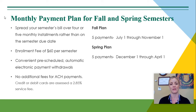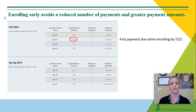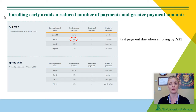The fall plan is five payments from July 1st through November 1st, and the spring plan is five payments December 1st through April 1st. Enrolling early avoids a reduced number of payments and greater payment amounts. If you enroll before June 22nd, your first payment will withdraw automatically on July 1st. If you enroll after June 22nd, your first payment will be due at the time you sign up and the next payment will be on the first of the month after you sign up.